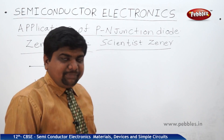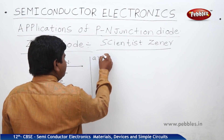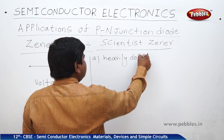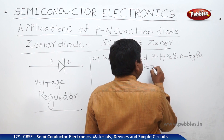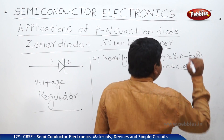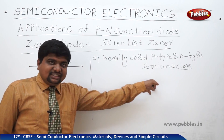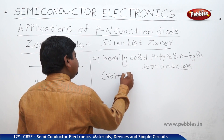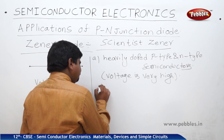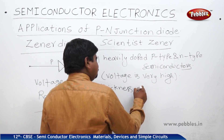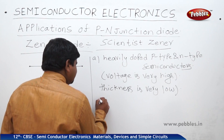The construction of the Zener diode involves P-type semiconductor and N-type semiconductor joined together to form the Zener diode, and it is heavily doped. Heavily doped P-type and N-type semiconductors are joined together to form this one. Because of this heavy doping, the voltage passing through this is very high, but the thickness will be very low. When the applied voltage is equal to the Zener voltage, a large breakdown will take place.